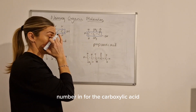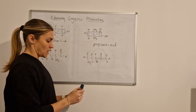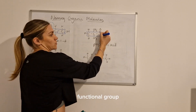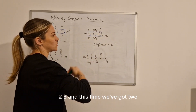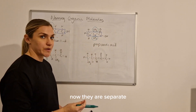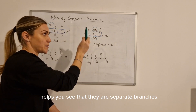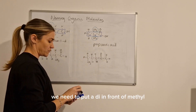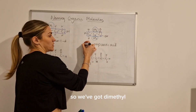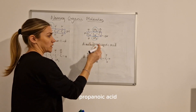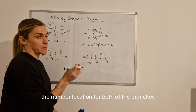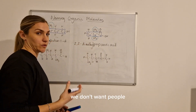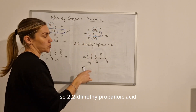You don't need to put a number in for the carboxylic acid because the carboxyl group can only ever go on carbon one — at the end of the chain. We number from the end closest to the functional group: carbon one, two, three. This time we've got two methyl groups. Drawing circles around them helps you see they are separate branches. Both are methyl branches with one carbon each, but because we've got two of them we put 'di' in front — di means two. So it's 2,2-dimethylpropanoic acid, writing the number two twice to avoid any ambiguity.